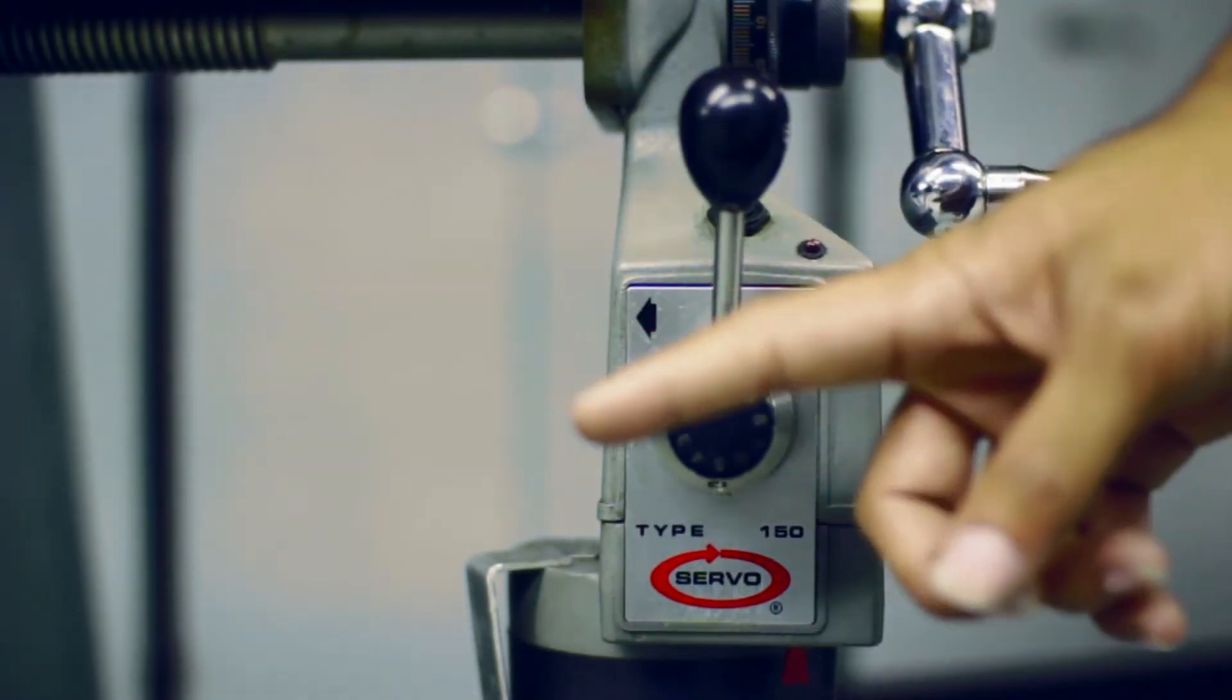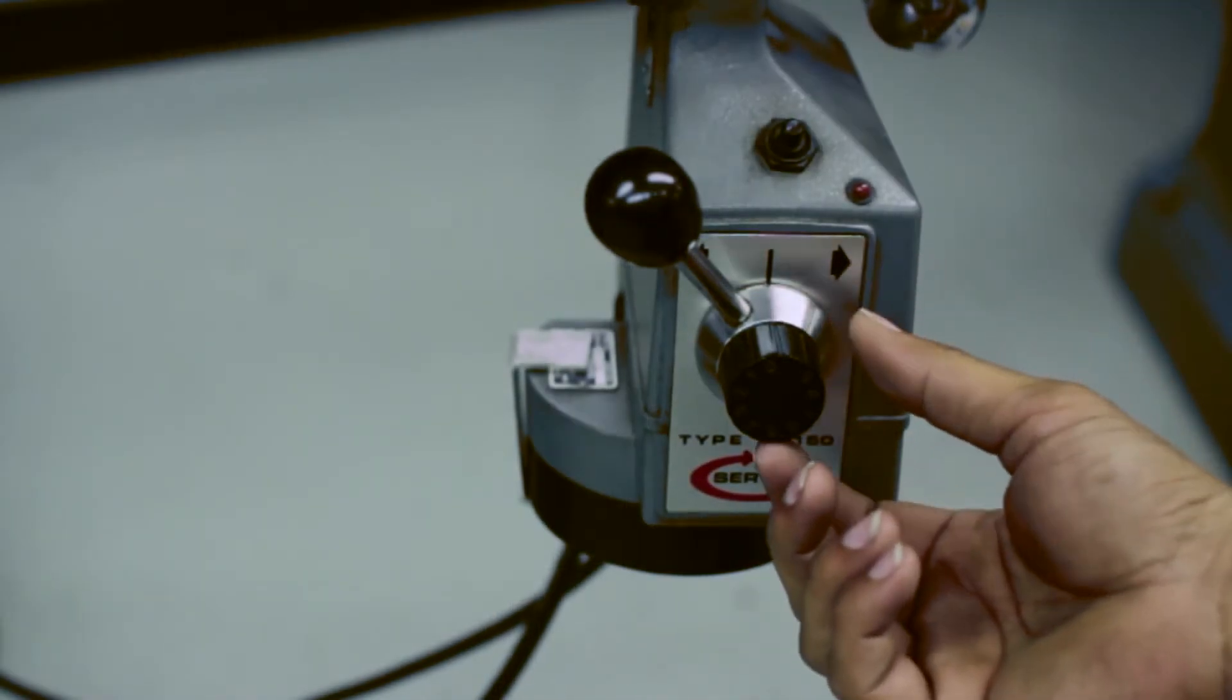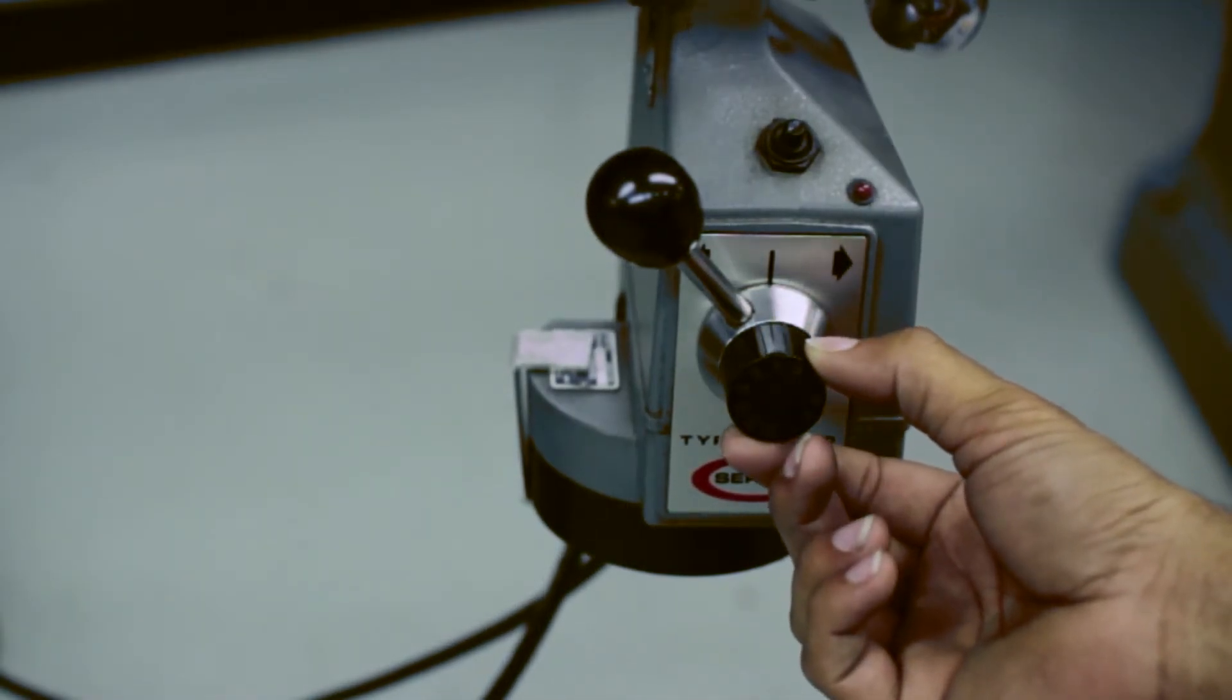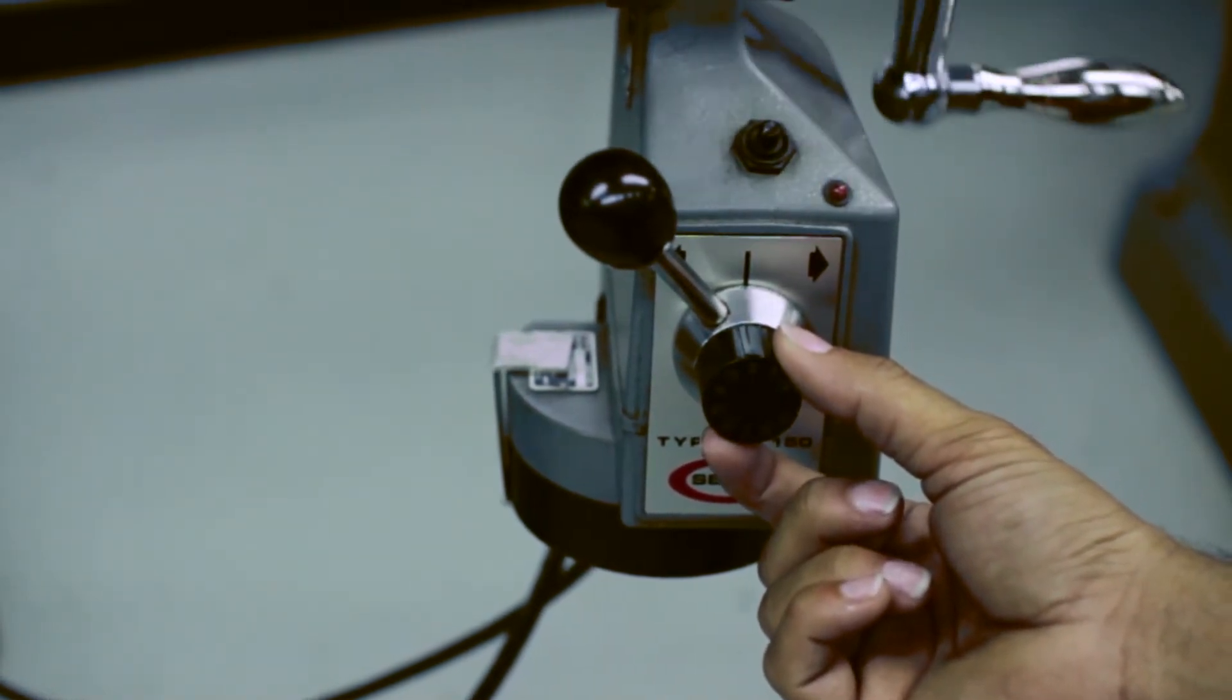Since we want our table to move left, we're going to move the directional lever to the left. To activate the power feed, turn the speed adjustment knob until the axis starts moving. You can change the speed by rotating the knob.